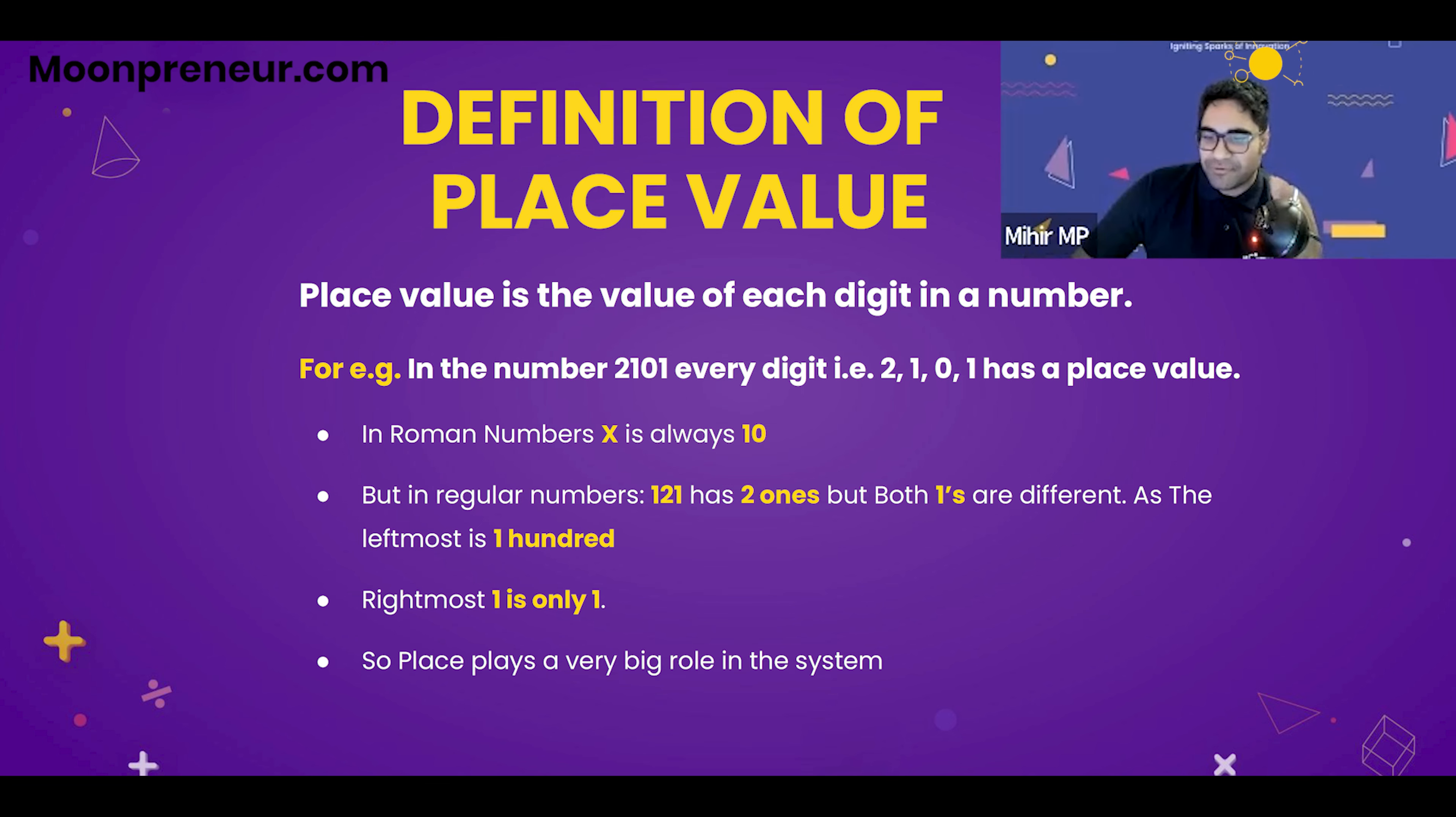So 121, you have to realize, like if you take regular numbers, has two ones. Both are different, right? The leftmost one is 100 and the rightmost one is only one. So the place of your number plays a very big role in your system.